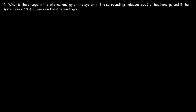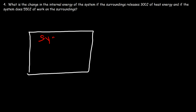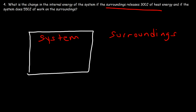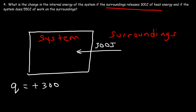Problem 4: what is the change in internal energy of the system if the surroundings releases 300 joules of heat energy and if the system does 550 joules of work on the surroundings? If the surroundings releases 300 joules of heat energy, the surroundings is losing energy so the system is gaining that energy — Q is positive 300. The system does 550 joules of work on the surroundings, so work is done by the system, meaning W is negative.